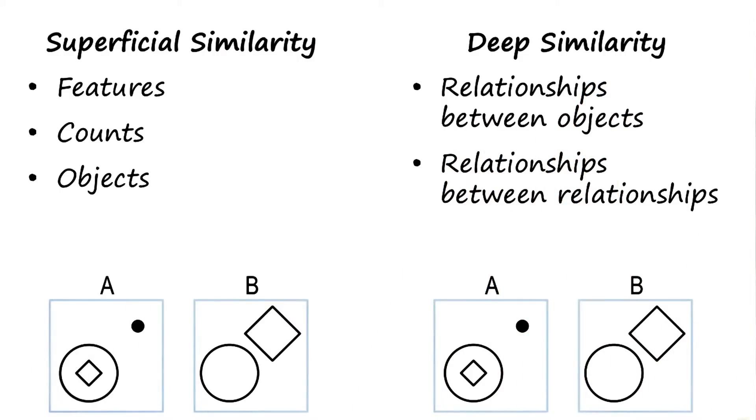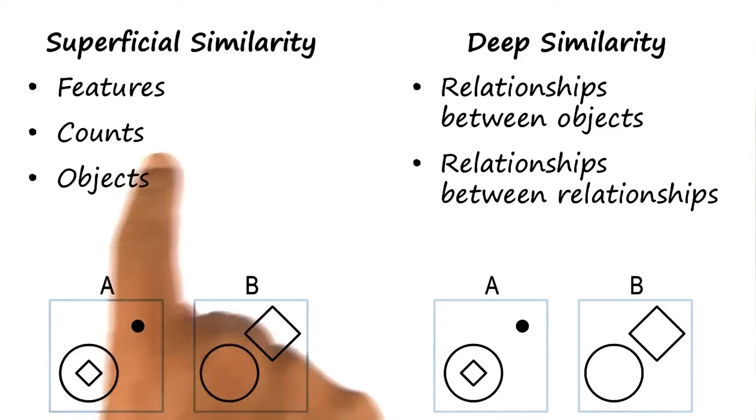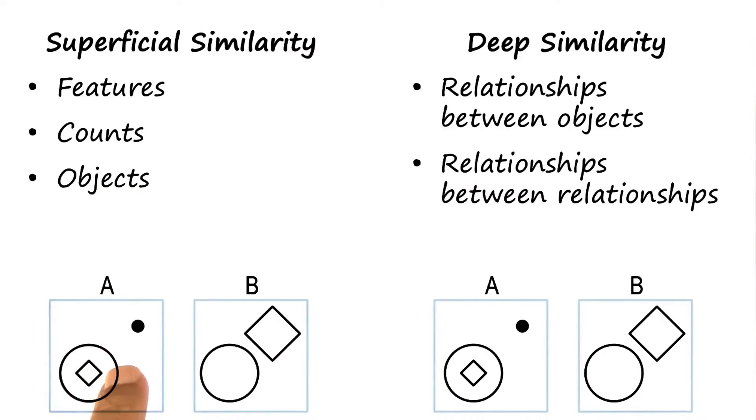Examples of this arise from the Raven's test, with which you are already familiar. Features here refer to the size of the square, the size of the circle, or perhaps whether it's a hollow square or a solid dot. The count refers to the number of squares, or the number of circles in a particular image. Objects here refer to circles, and squares, and dots.